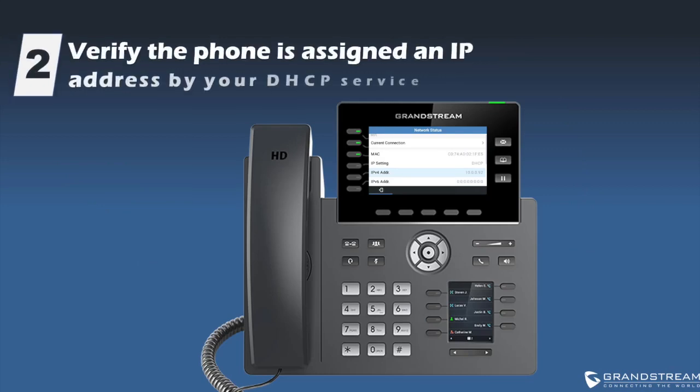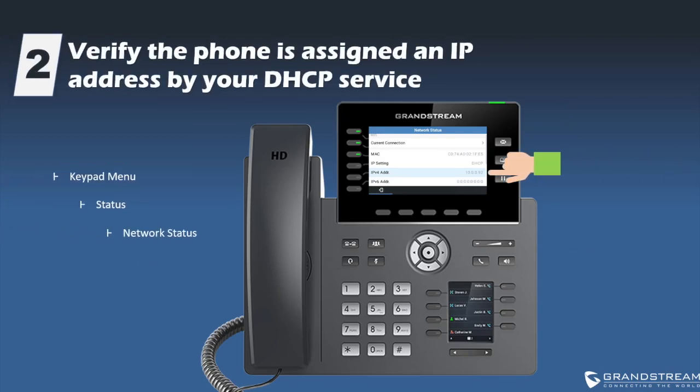You can also check the network status on the IP phone to confirm if the phone gets assigned an IP address. If you are using DHCP, the DHCP server should assign the IP phone an IP address and other network values such as gateway IP address and DNS. If you have assigned a static IP address to the phone, ensure they are entered correctly.